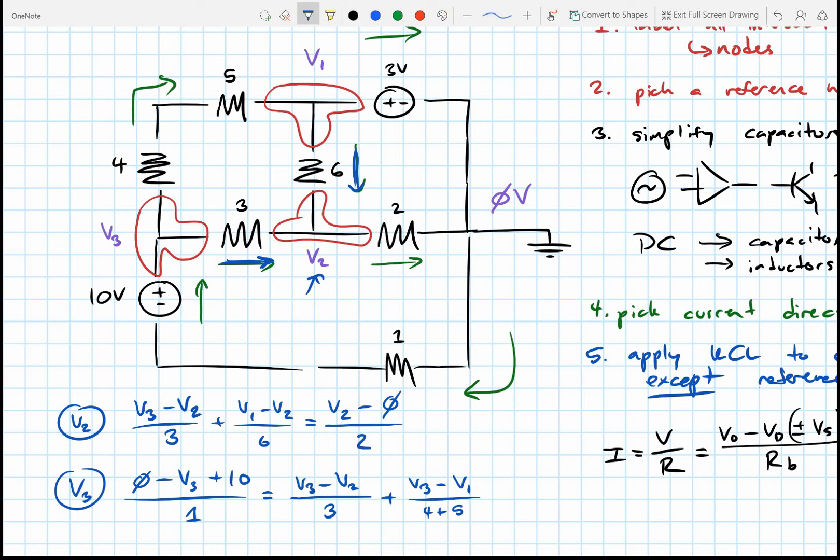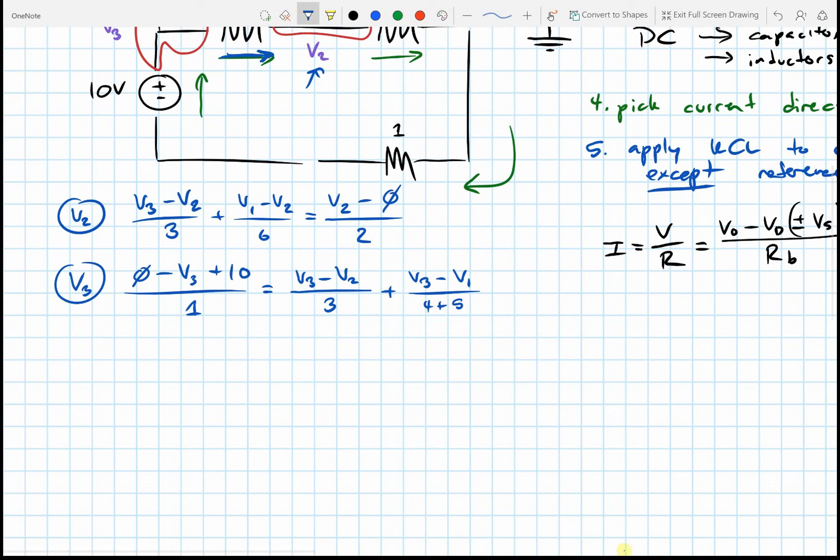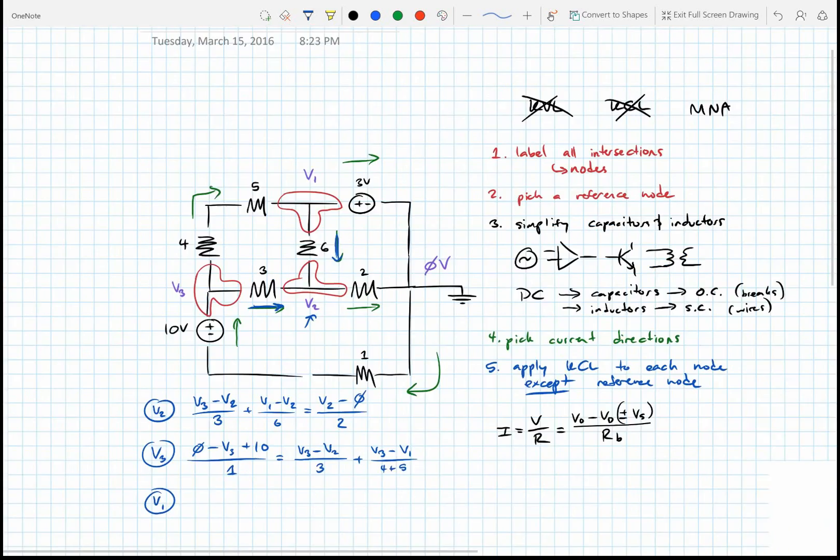You notice before I started this, I wasn't doing any simplifying. I wasn't going, oh well, these are in parallel, I can merge those, and these are in series, I can merge those. No, because we want to know the voltage at every branch. And using that, we can solve the current at every branch. If you simplify the whole circuit, you're not going to be able to know where everything is everywhere because you've simplified it away.